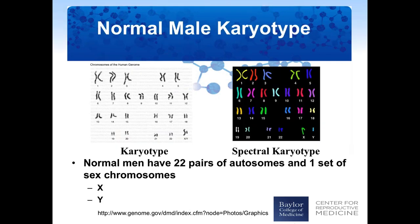This slide shows a normal male karyotype where the chromosomes are visualized. There are many ways to do a karyotype — this is a high-resolution banding karyotype analysis, and this is a spectral karyotype. The information we get from both are similar. In this karyotype, we can see that all chromosomes are present, and normal men have 22 pairs of autosomes and one set of sex chromosomes, with the Y chromosome being male-determining.